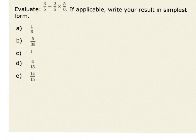In this problem, we are asked to evaluate the numerical expression 3 fifths minus 2 fifths times 5 sixths. In order to evaluate this expression, we will have to remember the order of operations.